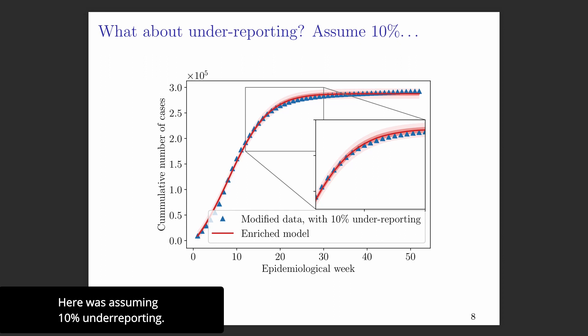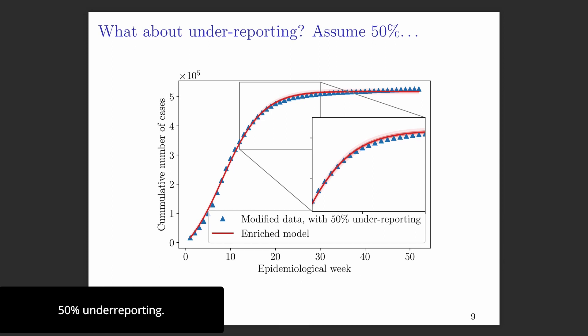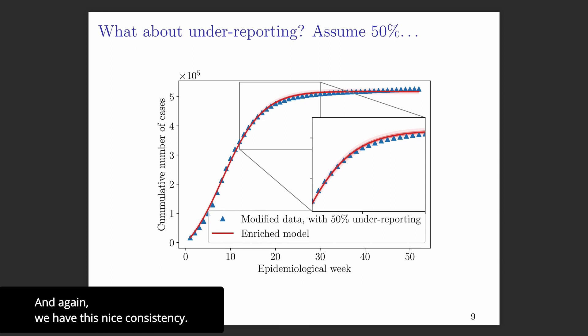Here is assuming 10% underreporting, and you can see the model is able to adapt and is still consistent with the data. And here is a hypothetical situation of assuming 50% underreporting — again we have this nice consistency.